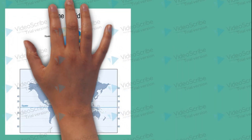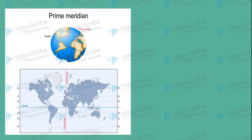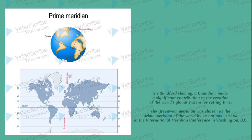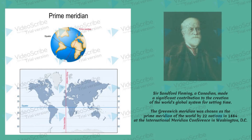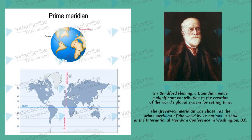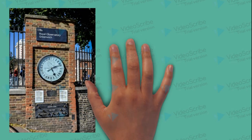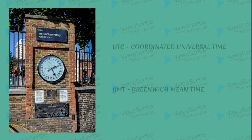In Greenwich, the meridian is known as the center of the Earth. On October 22, 1884, in Washington DC, an international meridian conference was held. Sir Sanford Fleming is known as a Scottish-Canadian engineer. In the prime meridian time zone, UTC is called Coordinated Universal Time, or GMT is called Greenwich Mean Time.